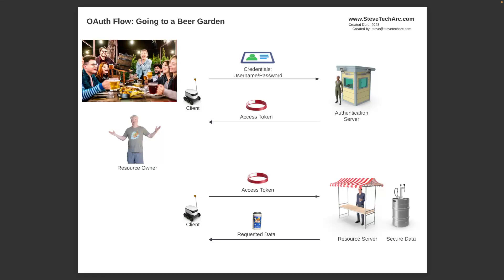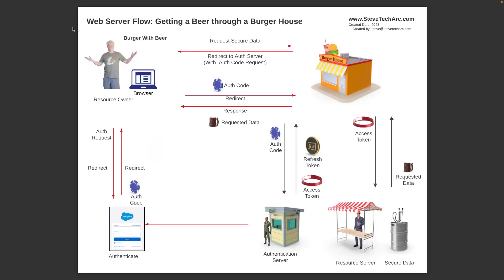Now we're going to move on to a more intricate use case. I'm actually not going to the beer garden directly — I'm going to a third party, the burger house. They don't have beer and they're going to get the beer through the beer garden, but they need to be able to get to it with my credentials. I'm interfacing through what's called a front-end channel, which is a little less secure than a direct channel — the back-end channel. The front-end channel is in red, the back-end channel is in black. I go to the burger house and I request some secure data — the beer.